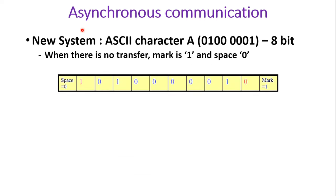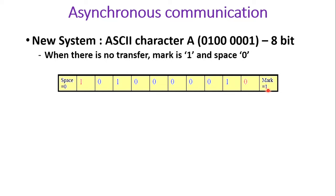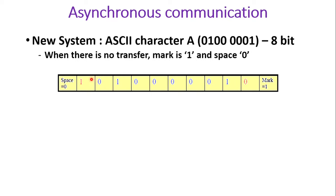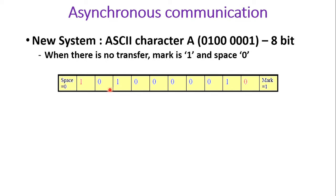For example, the ASCII character 'A' is represented as 01000001, which is 41 in hex. To transmit this, first the line is in mark state (no data). Then the transmitter puts the start bit as 0, followed by the LSB first: 1, 0, 0, 0, 0, 0, 0, 1 — the 8-bit data — and finally a stop bit of 1. This is the 10-bit framing of ASCII character 'A' in asynchronous communication.